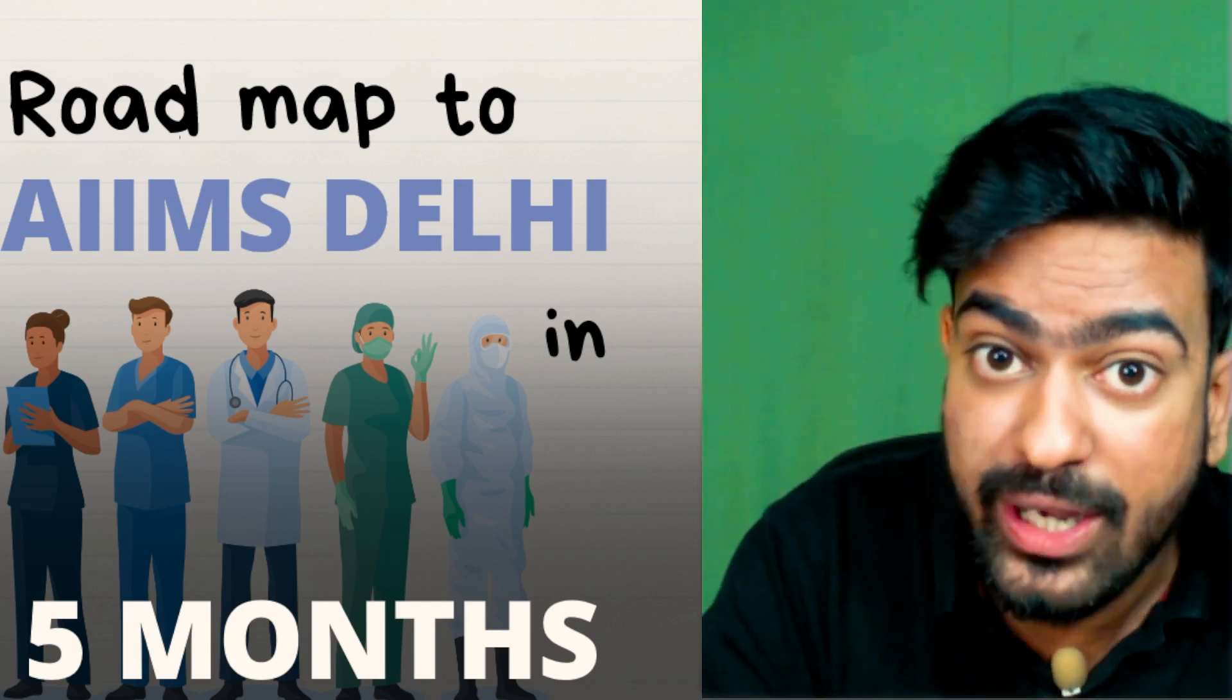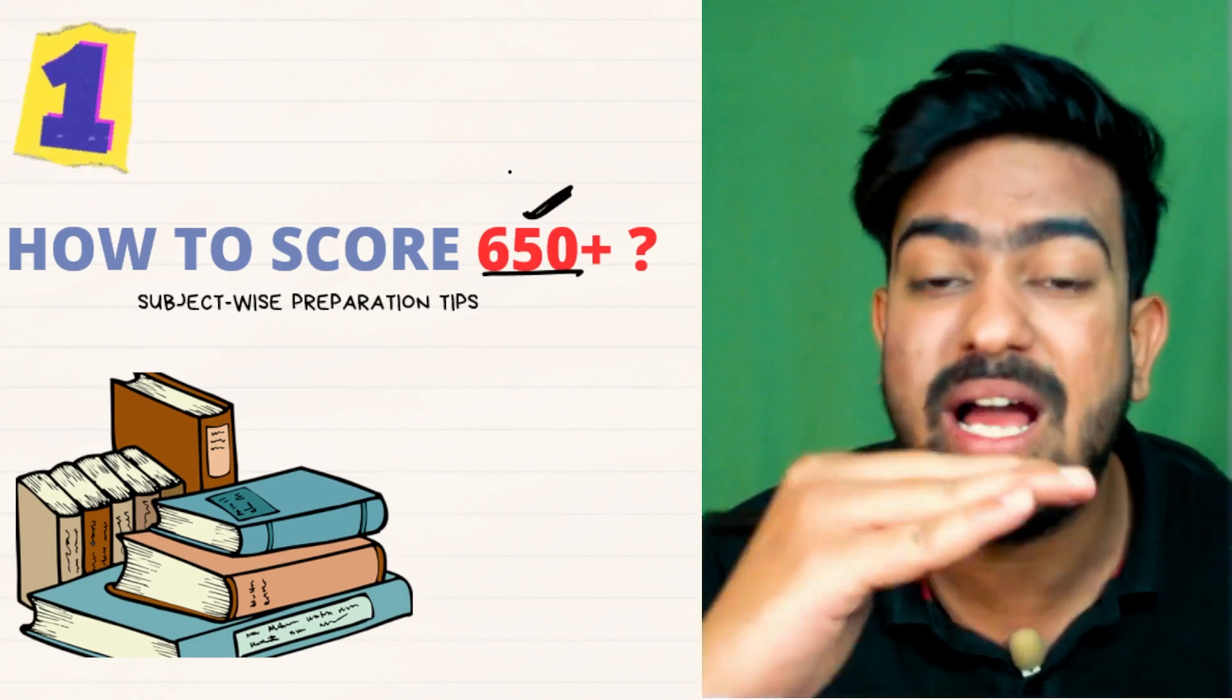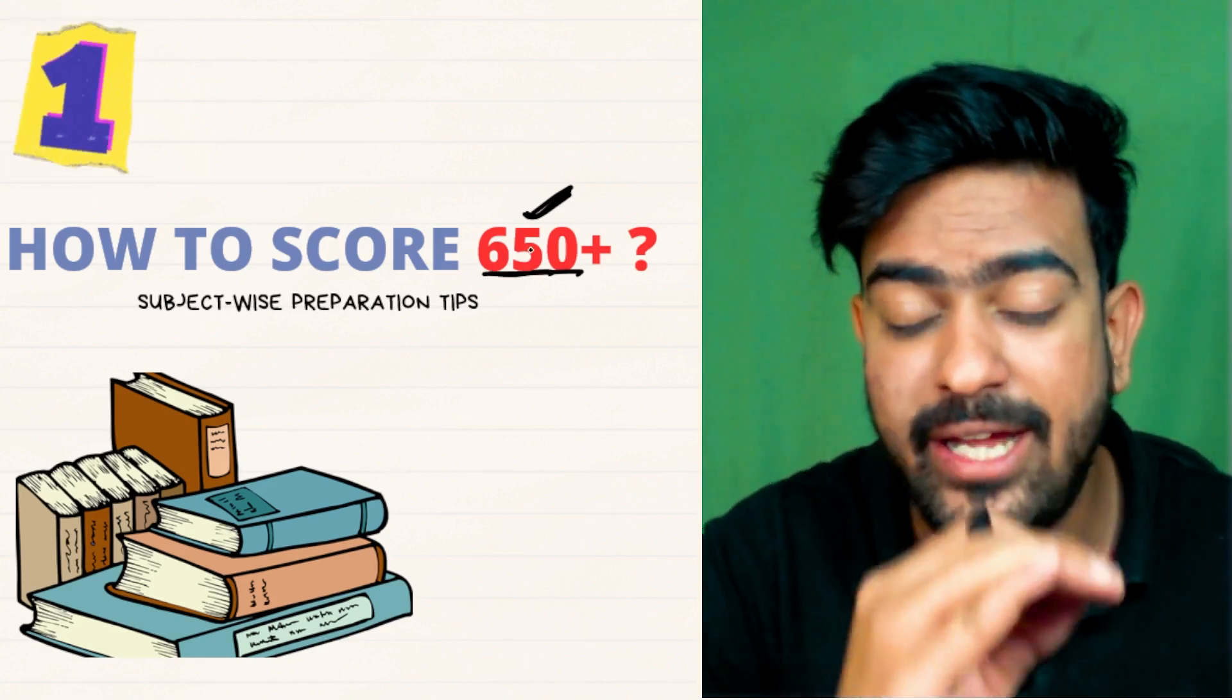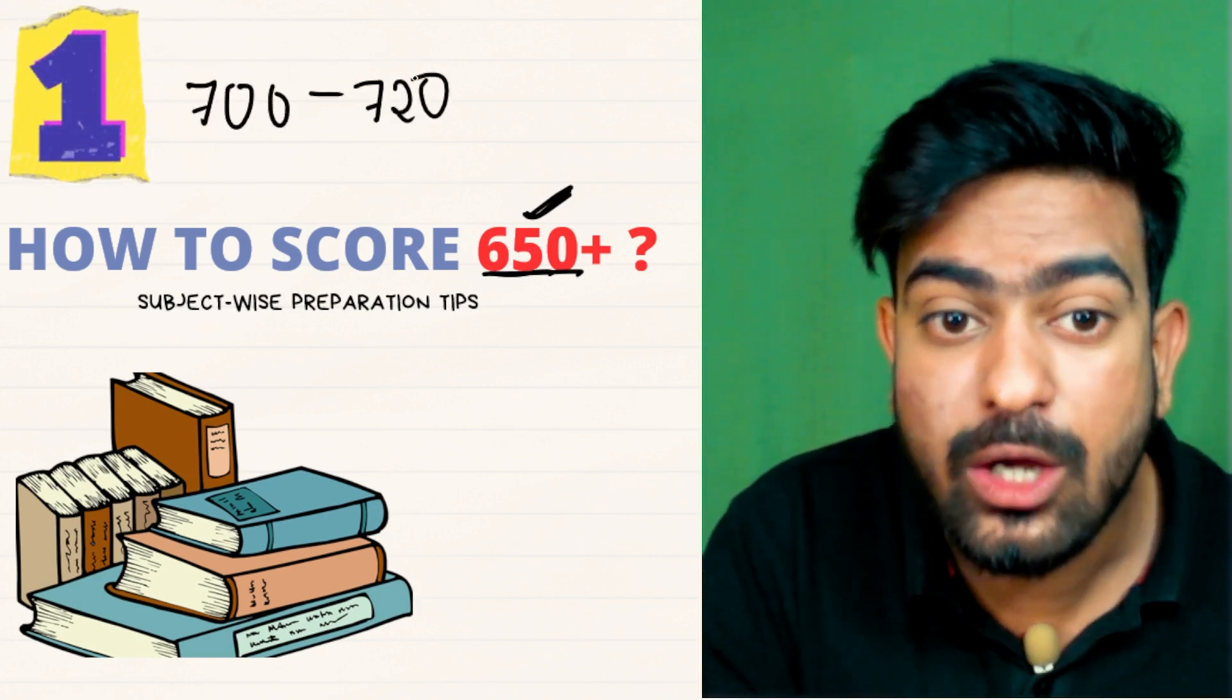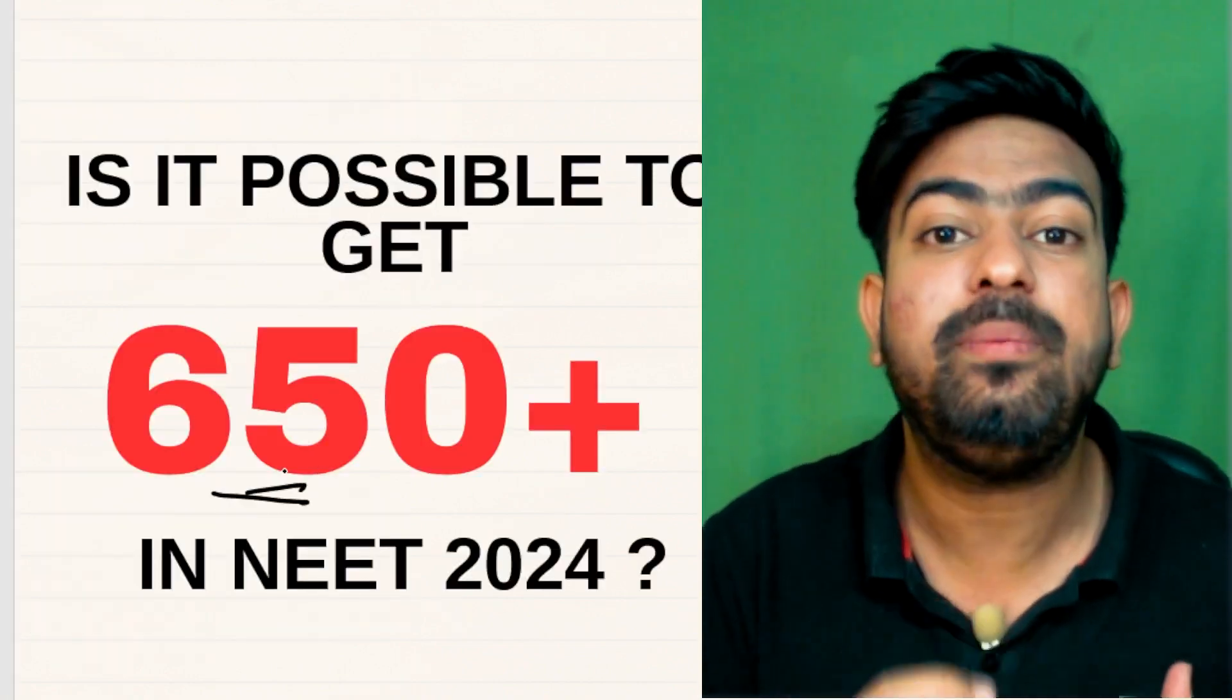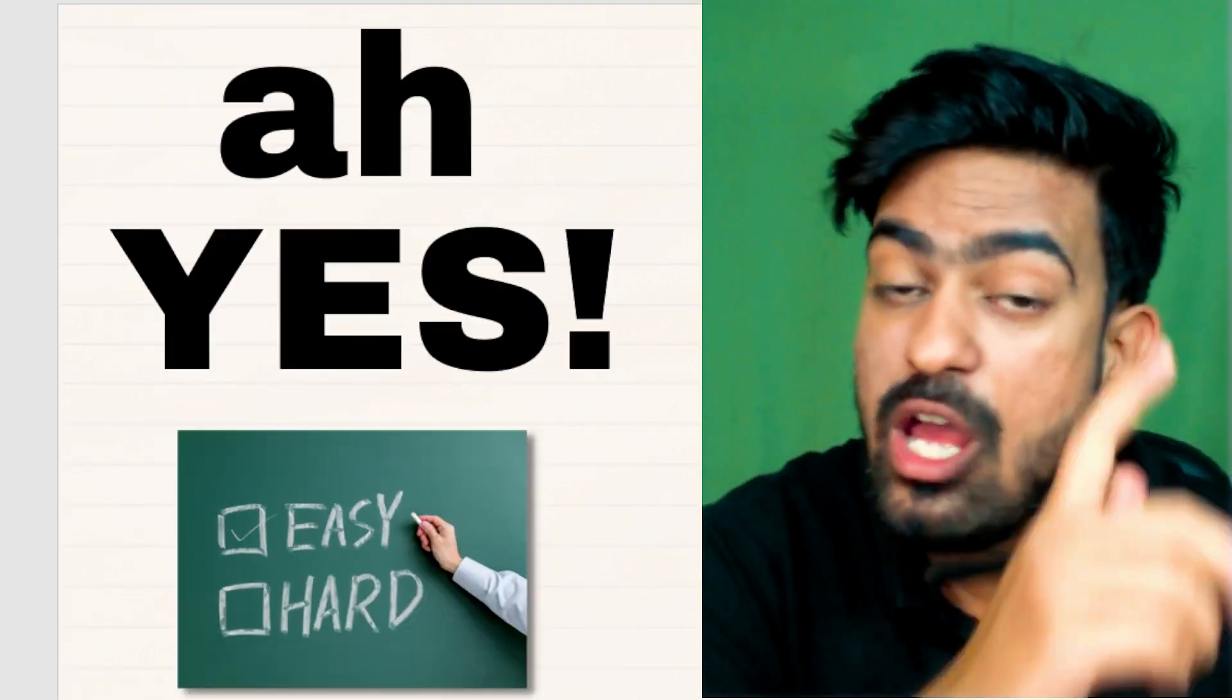But first, the major question is that to reach into AIIMS New Delhi we have to cross a minimum score which is 650. And once you have crossed this minimum score, then you can practice and reach to a score of 700 to 720. The question is, is it really possible now to score 650 plus? My answer is yes, but this answer comes with lots and lots of things.